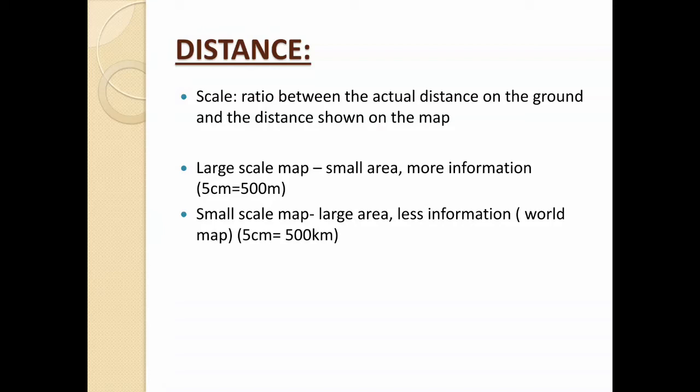A large scale map represents a small area but gives more information. For example, if 500 meters on the ground is expressed as 5 centimeters in the map, it is a large scale map. If 5 centimeters represents 500 kilometers, it will be a small scale map — it covers a large area but has less information. An example of a small scale map is the world map.